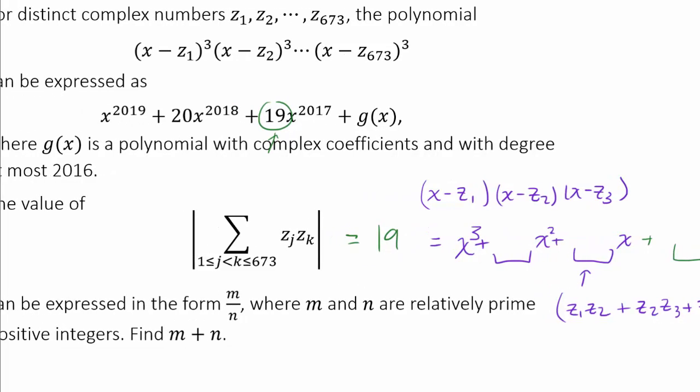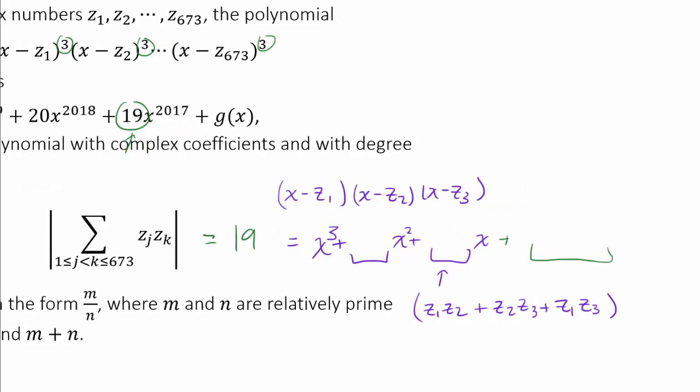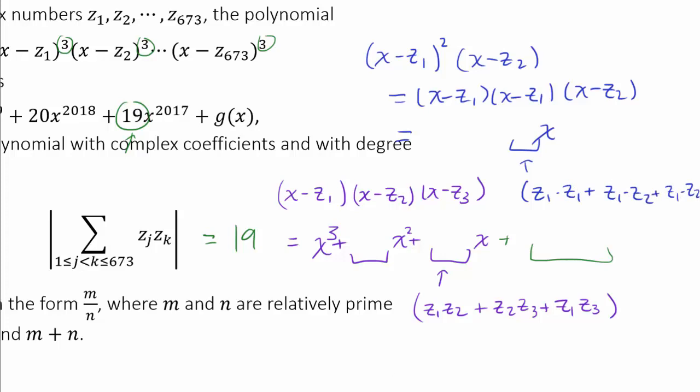Well, we gotta look at our expression closely. We are not multiplying x minus z1, x minus z2, and x minus z sub 673. In that case, 19 would be correct, but we are multiplying x minus z1 cubed, x minus z2 cubed, and x minus z sub 673 cubed. All of the roots are triple roots. How is that changing anything, you may ask? Let's consider x minus z1 squared times x minus z2, or x minus z1, we have two of those, times x minus z2. If we consider the coefficient of x one more time, that's going to be z1 times z1, plus z1 times z2, plus z1 times z2.